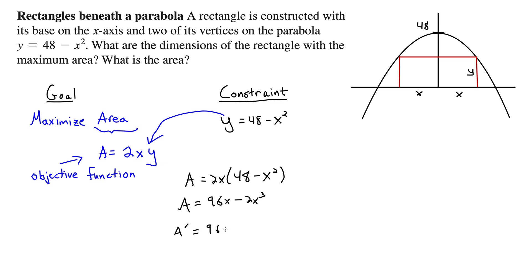A prime is 96 minus 6x squared. But we want to set this equal to 0 to find the maxes and the mins. Well, solving this then gives 96 divided by 6 is 16 equals x squared. And then we square root both sides and only take the positive value because we're looking for distance which gives us x equals 4.